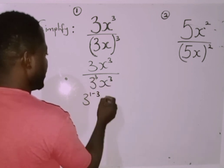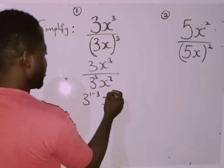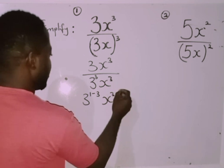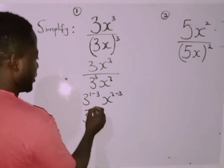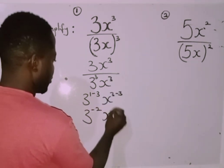The same thing with this x raised to power 3, I'm going to subtract this from it. Then I'm going to have 3 raised to power minus 2, x raised to power 0.